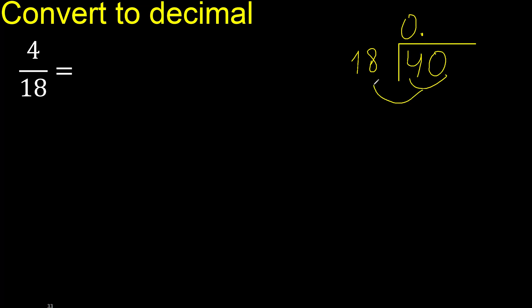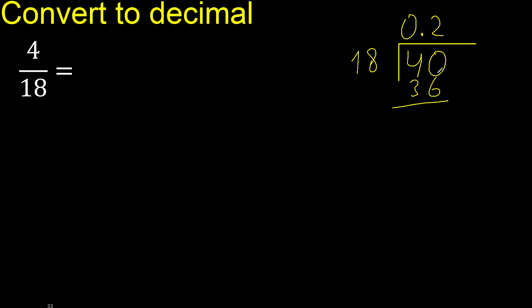40 is not less, therefore with 40: 18 multiplied by which number is nearest to 40 but not greater? 18 multiplied by 3 is greater; 18 multiplied by 2 is 36, which is not greater. Subtract: 40 minus 36 is 4. Next.